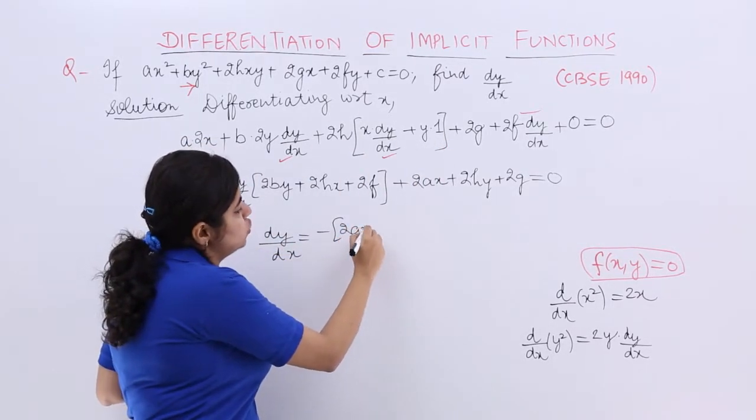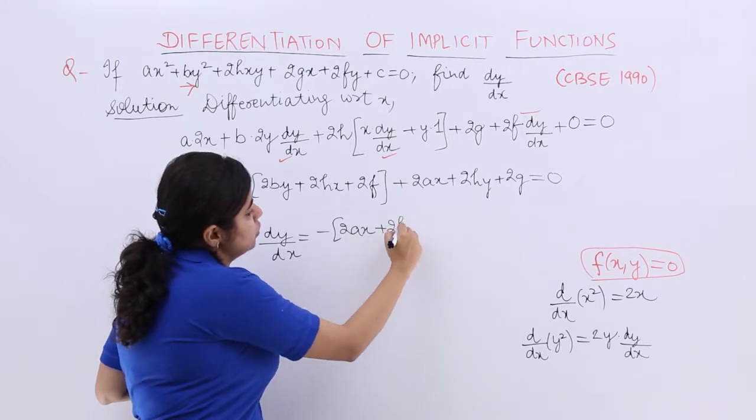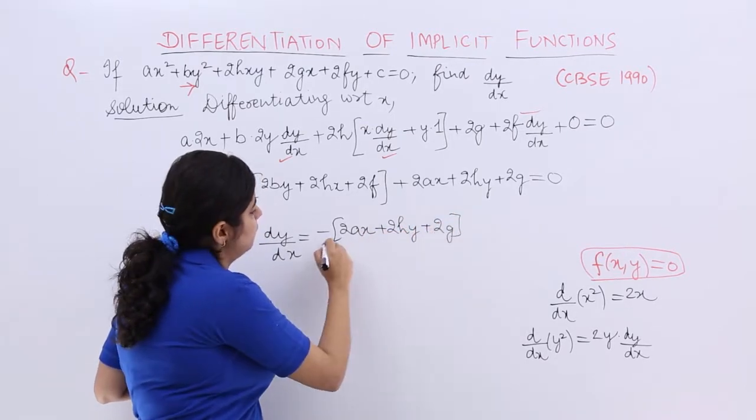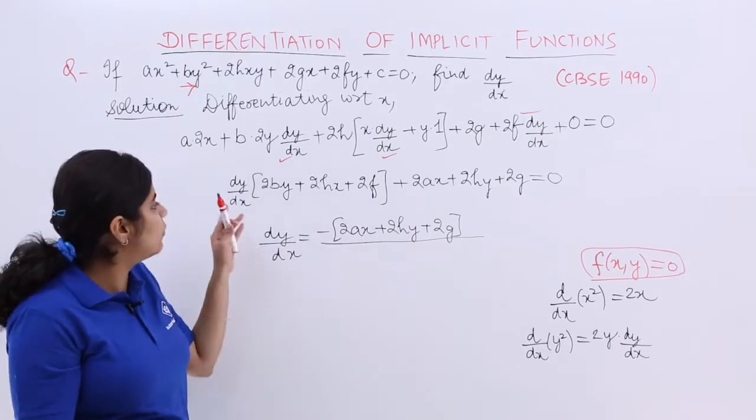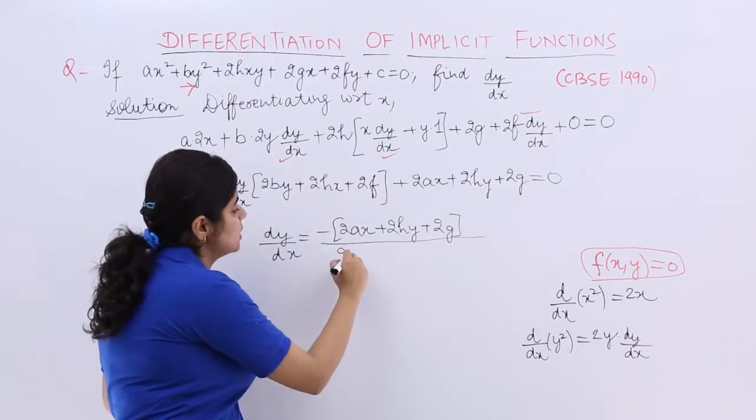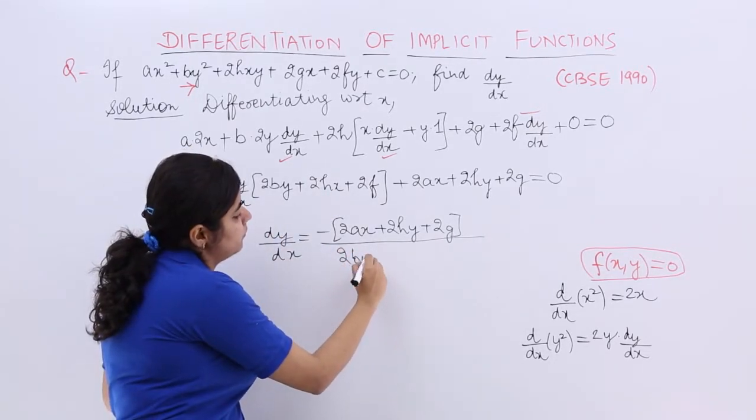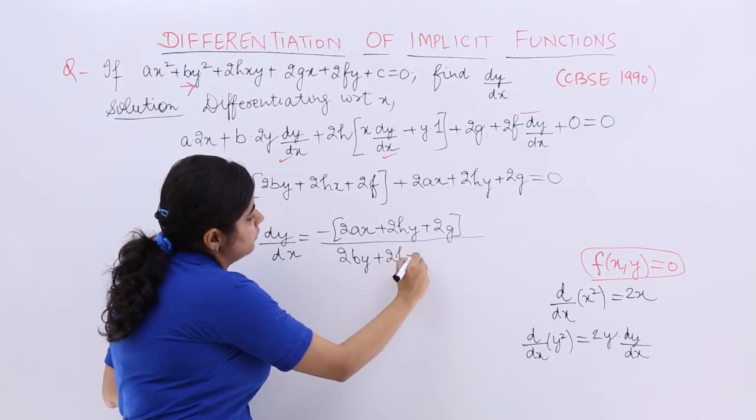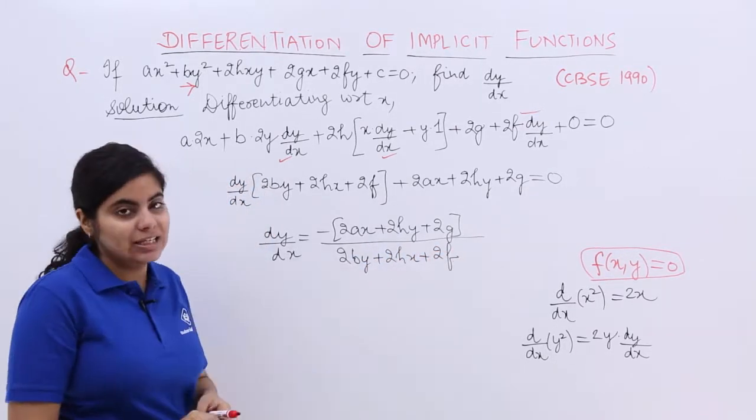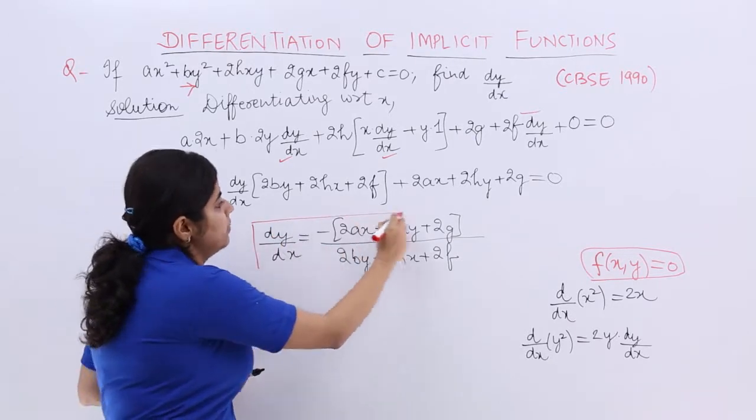So it becomes - 2ax + 2hy + 2g in the numerator. In the denominator, you have 2by + 2hx + 2f. So this is basically your answer for dy/dx.